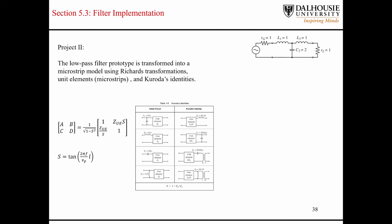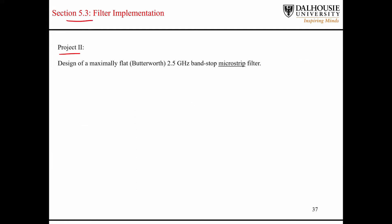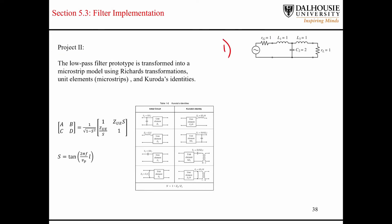So like I said at the beginning of the lecture, our first step is to come up with a low pass filter prototype. We want a maximally flat Butterworth filter. Ludwig starts with a third order filter like this.